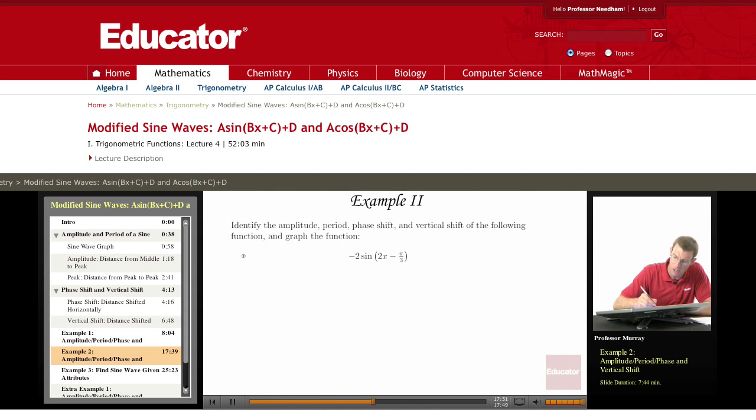Remember, we can read these off quickly, just remembering the formula A sin(Bx + C) + D. And if we remember, if we can figure out what A, B, C, and D are, we have formulas for all four of these properties.